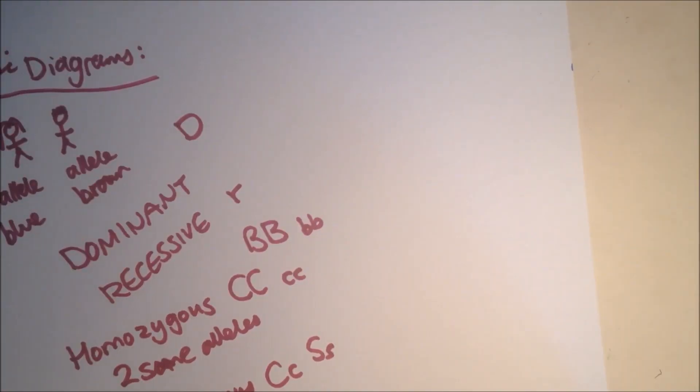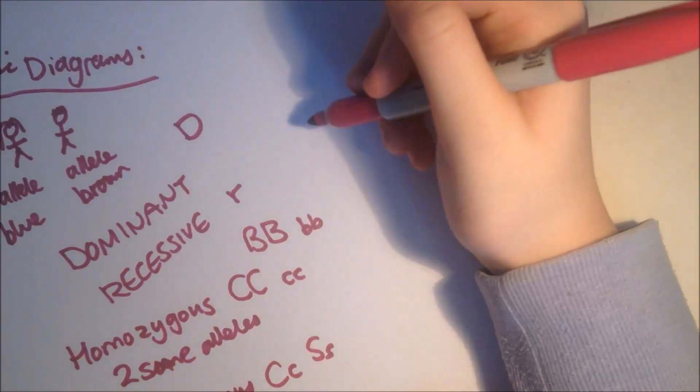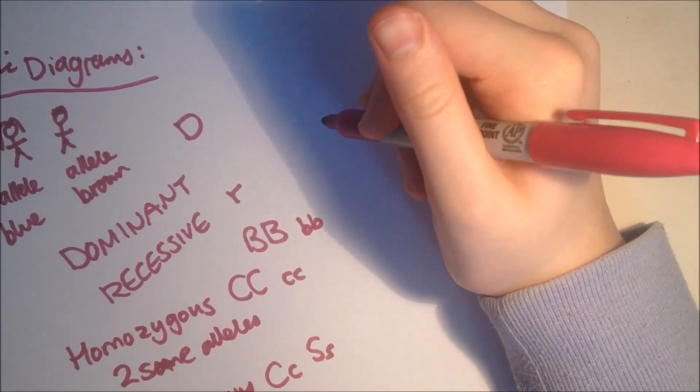Your genetic makeup, which is the alleles you have for a particular gene, is known as your genotype, and the characteristics they produce is known as your phenotype.